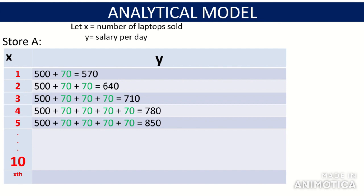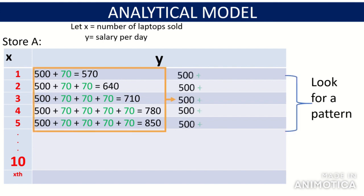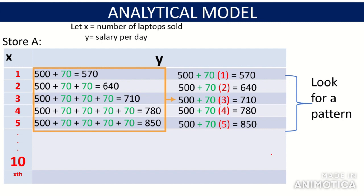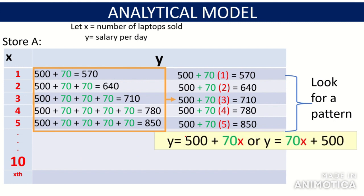Looking for the pattern in Store A's data: what is held constant is 500, and what changes is the multiplier — 1, 2, 3, 4, 5 — which correspond to the values of X. Therefore, we can express this as Y = 500 + 70X, or Y = 70X + 500 for Store A. Using this equation, when the store sells 10 laptops, Ina receives 1,200 pesos, and when it sells 20 laptops, she receives 1,900 pesos.